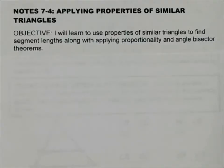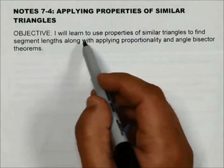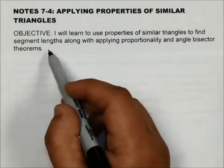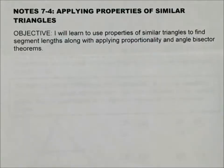Alright, today is 7-4, Applying Properties of Similar Triangles. The objective is I will learn to use properties of similar triangles to find segment lengths along with applying proportionality and angle bisector theorems.